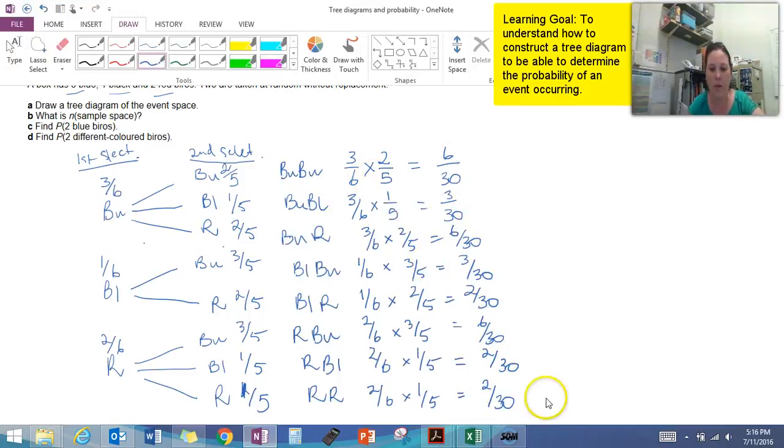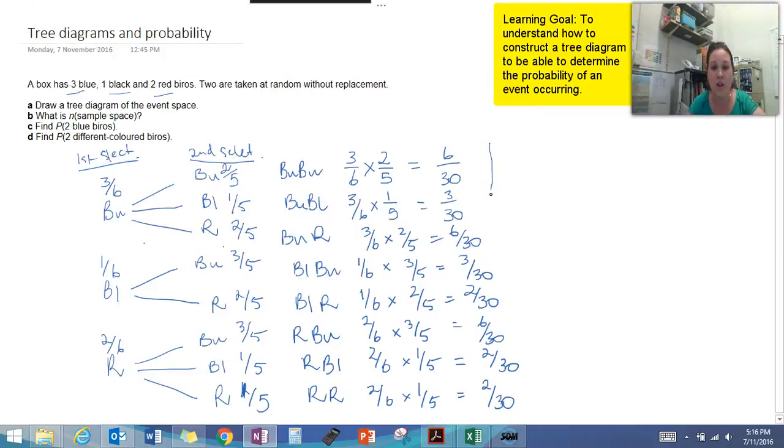So then once we've worked out all of our probabilities and the chances of those occurring, if we added up all of the numerators we should find that we actually end up with thirty. So we'd end up with thirty over thirty which is equal to one. So we have one chance in total of getting all of those particular outcomes. So that's our actual information for our sample space.